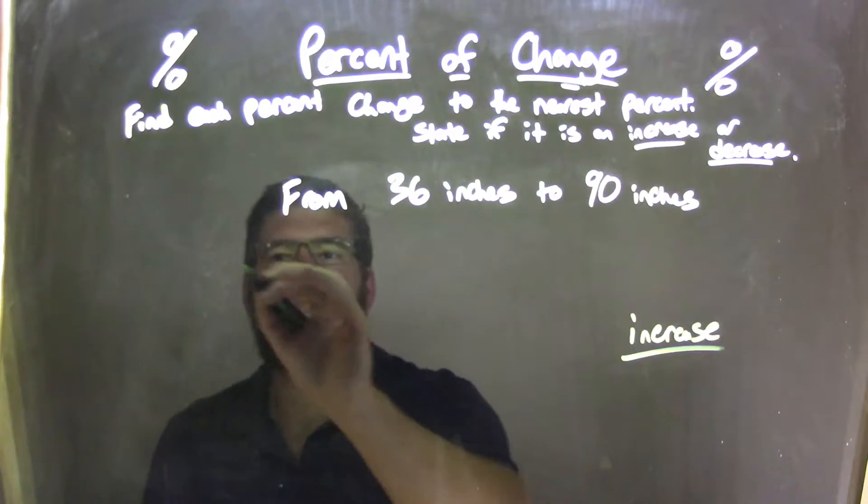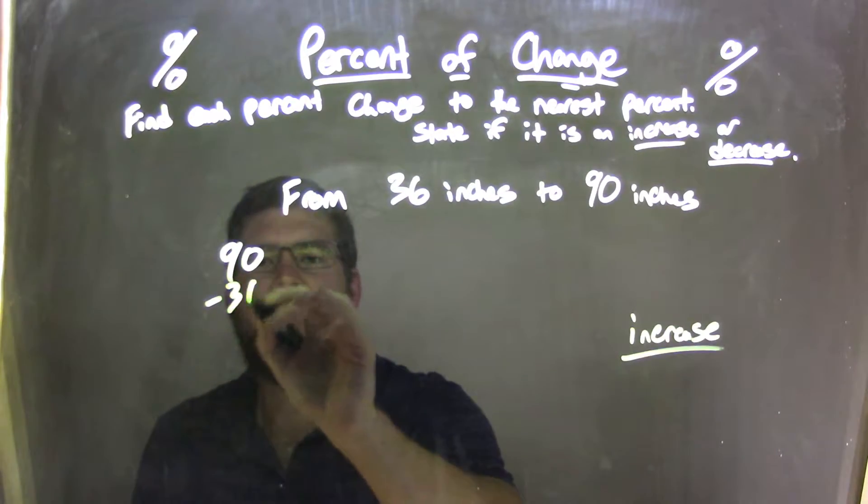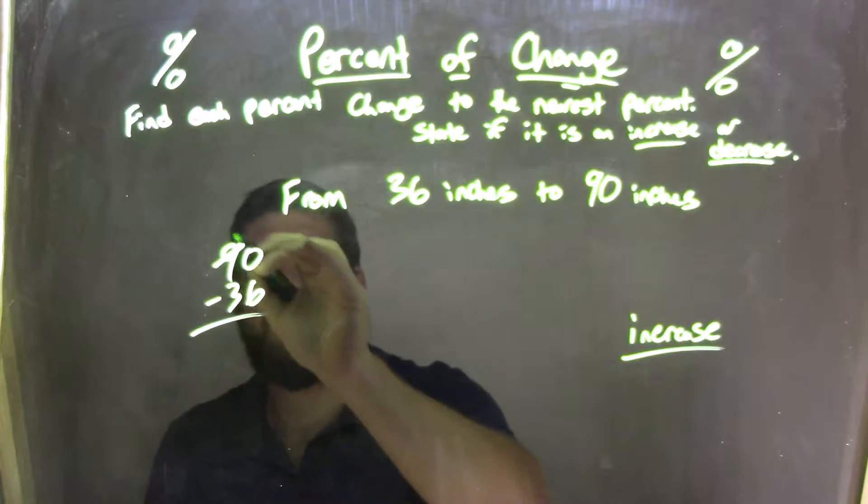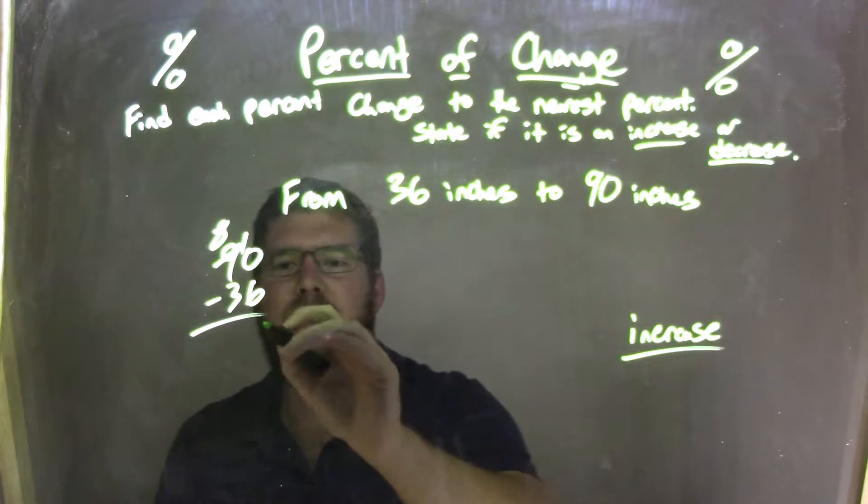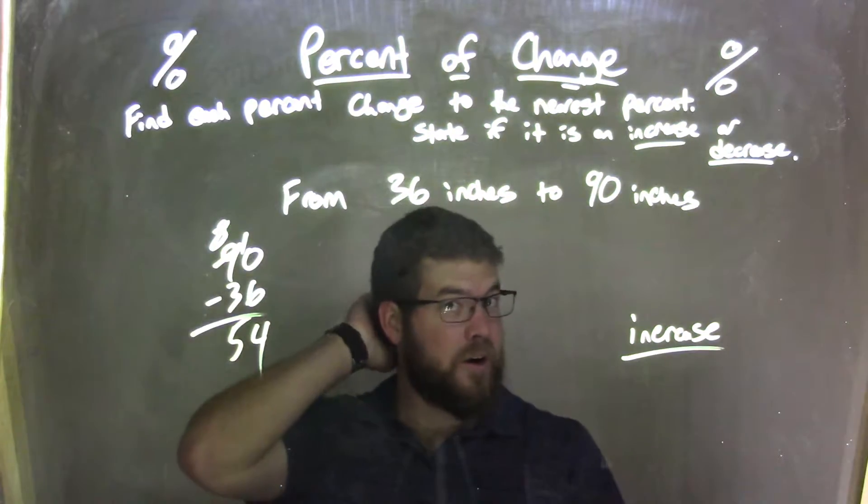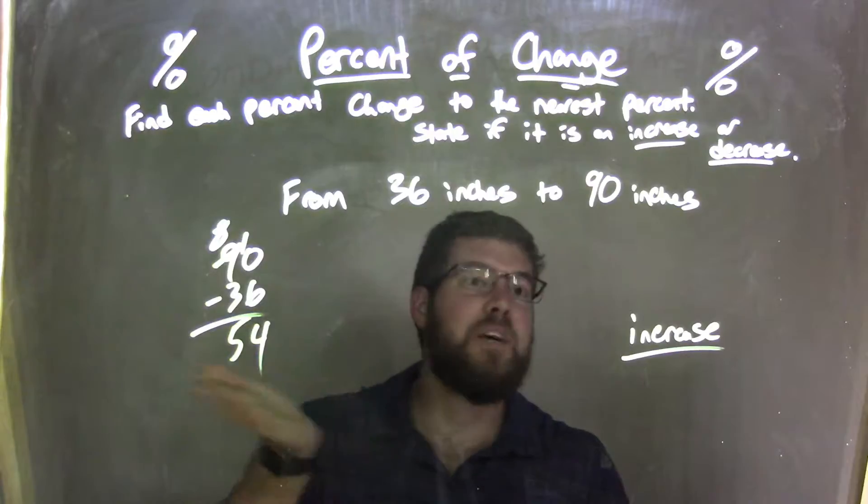Now I need to find the difference. So I take 90 and subtract 36 from it. Zero minus 6, you can't subtract it, make that an 8, make this a 10. Using the traditional method here, 10 minus 6 is 4, and 8 minus 3 is 5, and so we have a 54-inch difference between them.